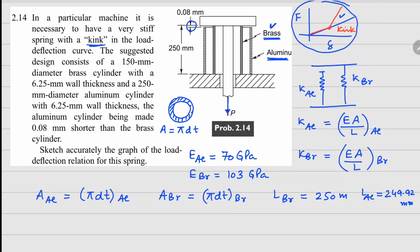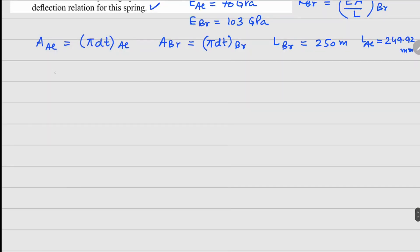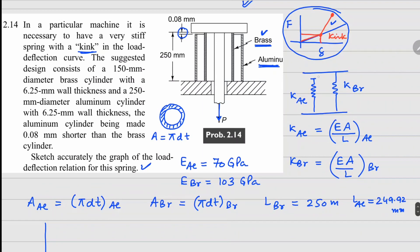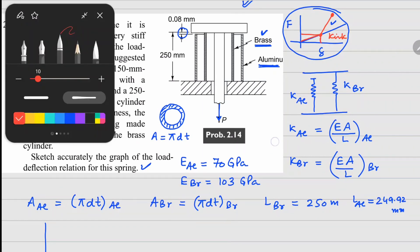So now to complete this graph here, because that's what they are asking us, let me draw a bigger figure here so that you can see clearly. So our first point of interest is this one right here. So up to delta equals to 0.08 mm, your only brass cylinder will be engaged.